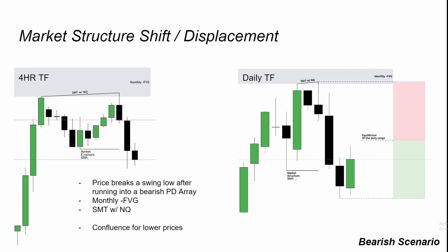Stacking SMT with price running into a bearish PD array, plus a break of a swing low — that is confluence for price to go lower or reverse. After price runs into the PD array, has SMT, and then makes a market structure shift, that is strong confluence for lower prices. Here we have the bearish monthly fair value gap on the daily time frame — we have that market structure shift and then the swing low that confirmed it.